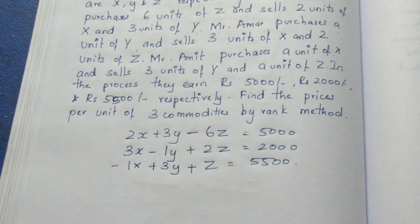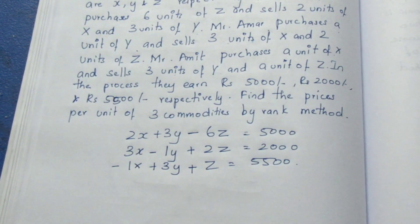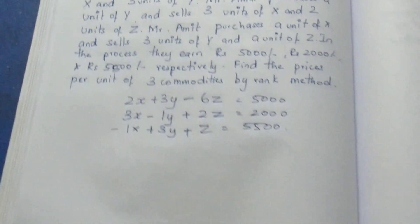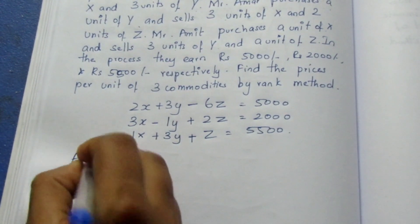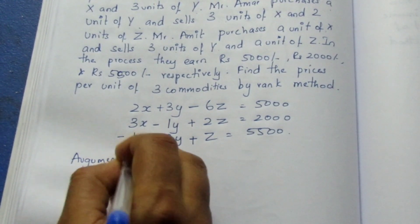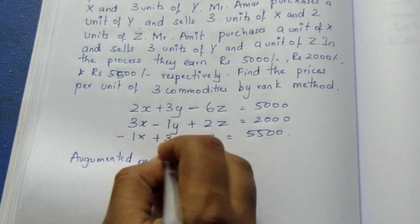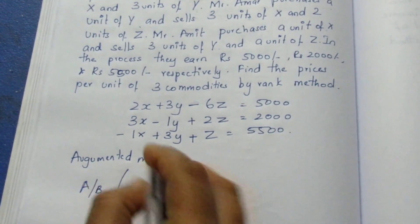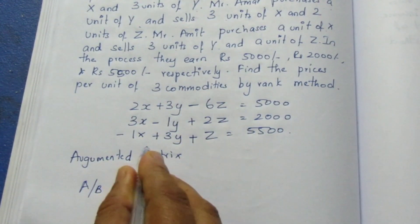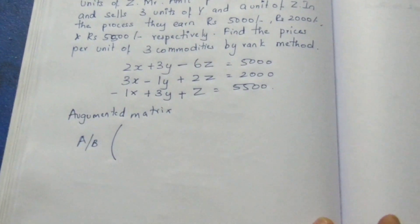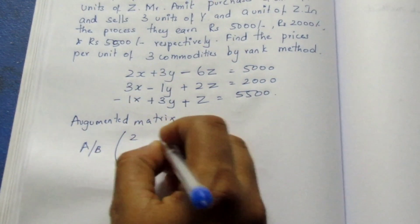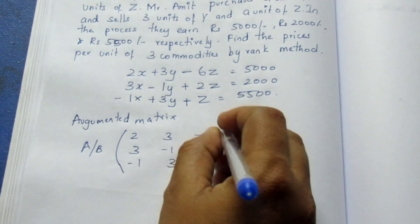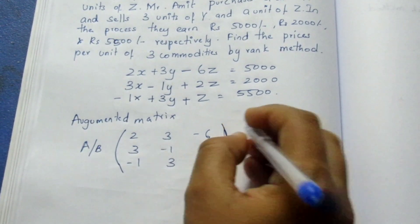We will solve this by the rank method. Using the rank method, we form the augmented matrix [A|B]. The coefficient matrix A has entries: row 1 is 2, 3, minus 6; row 2 is 3, minus 1, 2; row 3 is minus 1, 3, 1. The B column is 5000, 2000, 5500.